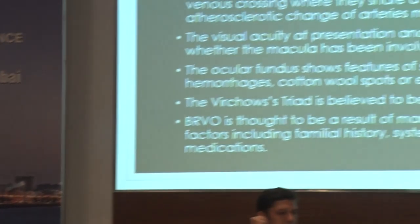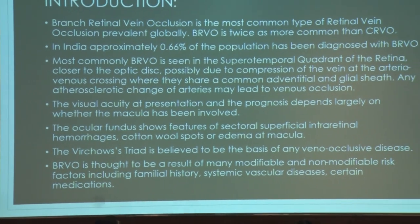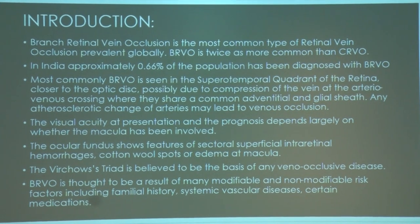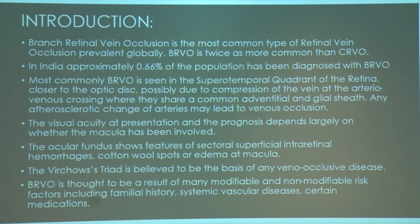Dr. Oindrila Chakrabarty presented on branch retinal vein occlusion (BRVO) and dyslipidemia, a hospital-based descriptive observational case series study. BRVO is the most common type of RVO, with a prevalence of 0.66% in India. It most commonly affects the superotemporal quadrant, with common adventitial sheath pathology implicated. Visual acuity and prognosis depend on macular involvement. Ocular fundus findings range from intraretinal hemorrhages, soft cotton-wool spots, to macular edema. The study aimed to estimate the proportion of BRVO patients also having dyslipidemia, enrolling 38 individuals over six years.